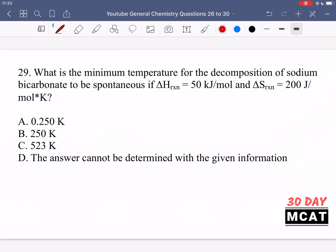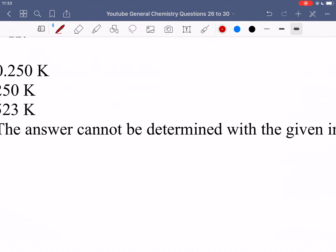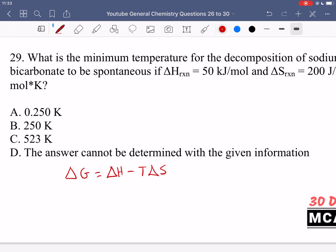In question 29 we're asked what is the minimum temperature for the decomposition of sodium bicarbonate to be spontaneous if we have this delta H and this delta S. So for this question we need to use the delta G equation, which looks like this: delta G equals delta H minus T delta S.